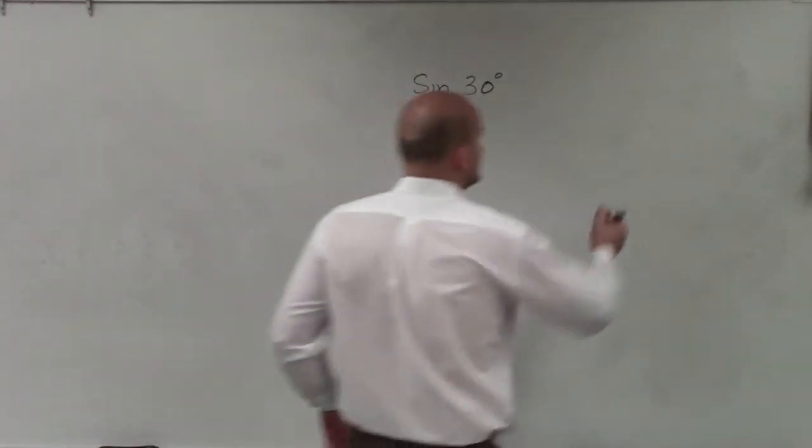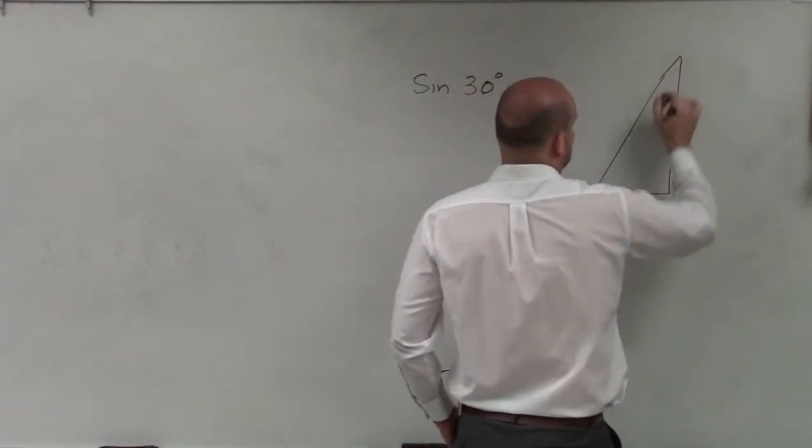So what we're going to do is we need to create a special right triangle, which is the 30, 60, 90.